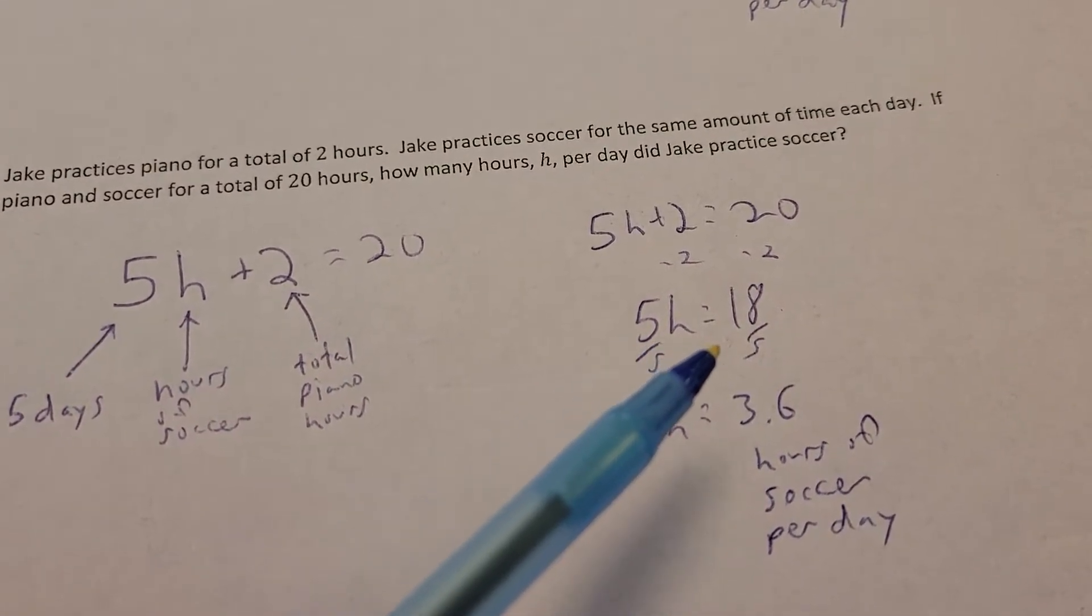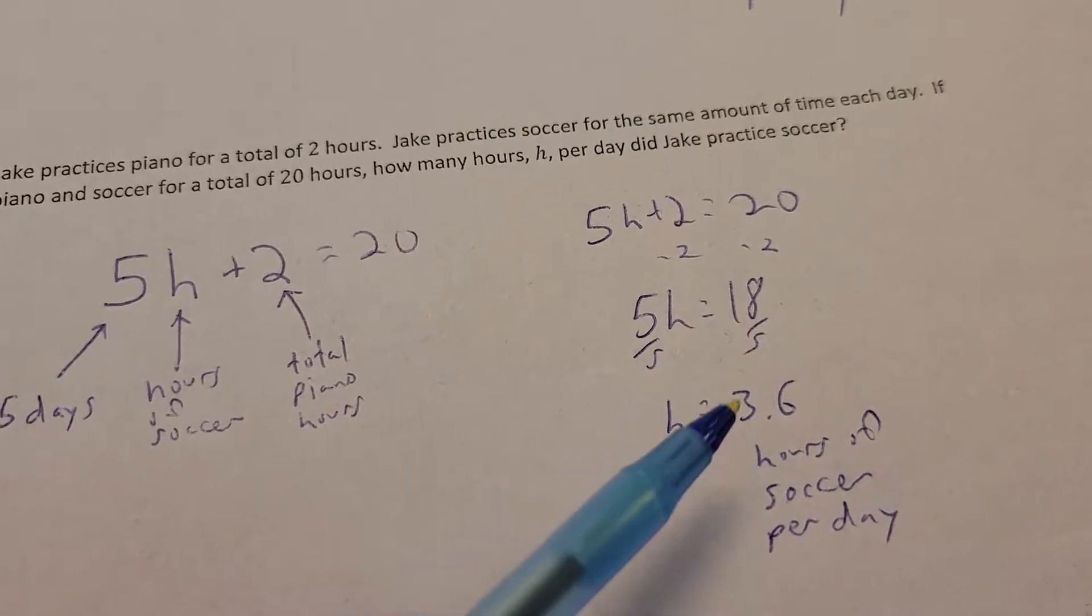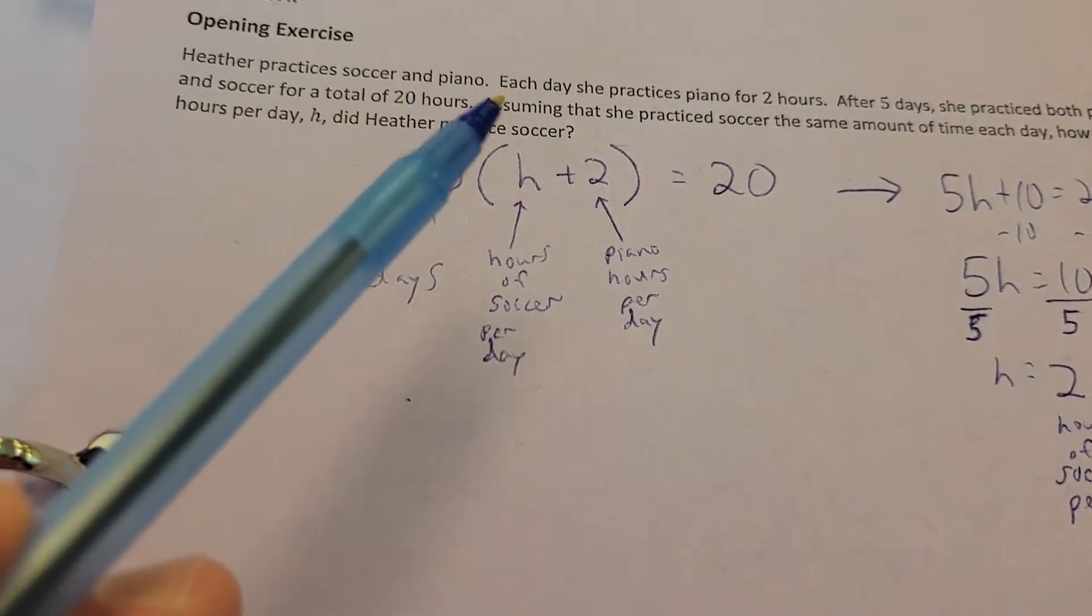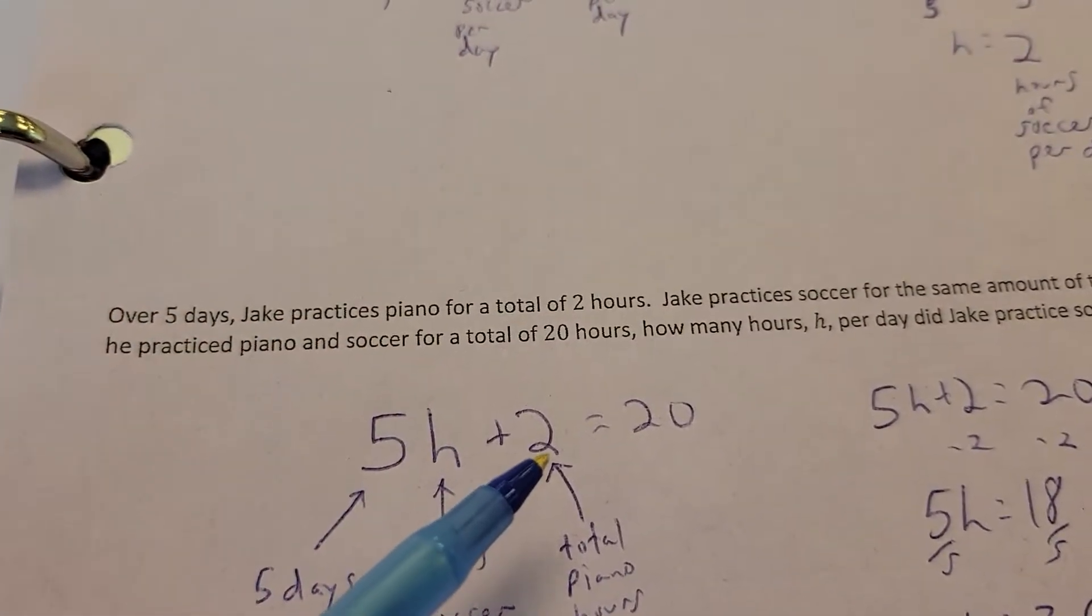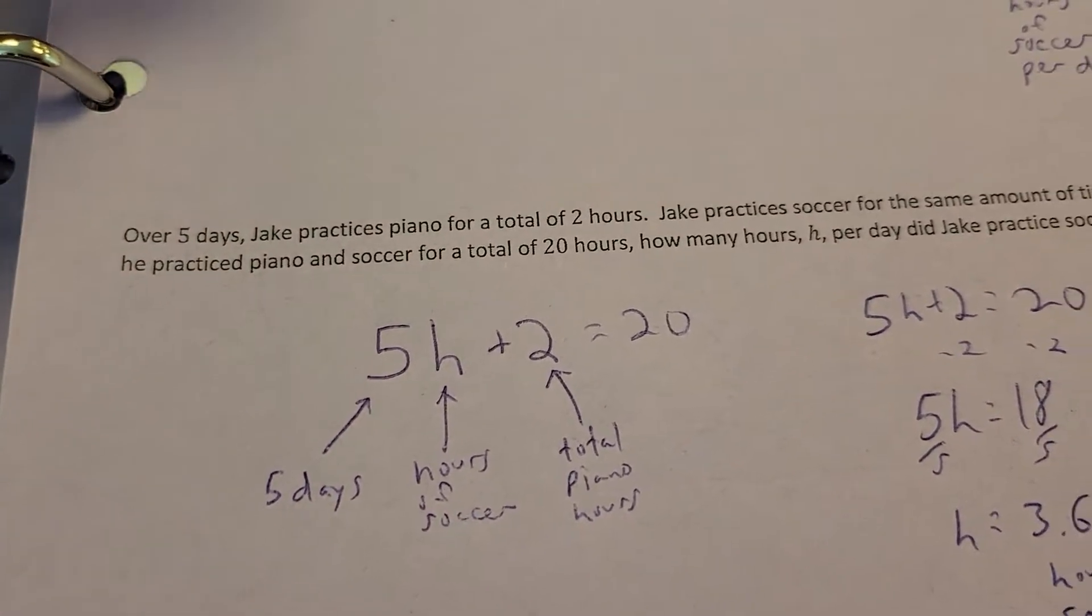So, 5 times the hours he does soccer, it happens to be 18 hours. So, divided by 5, you get 3.6. So, 3.6 hours of soccer per day. Notice how everything repeated itself, soccer and piano repeated itself every day. And this was just the total for the week. But this amount repeated every day. So, that's why there's the difference in the problems.